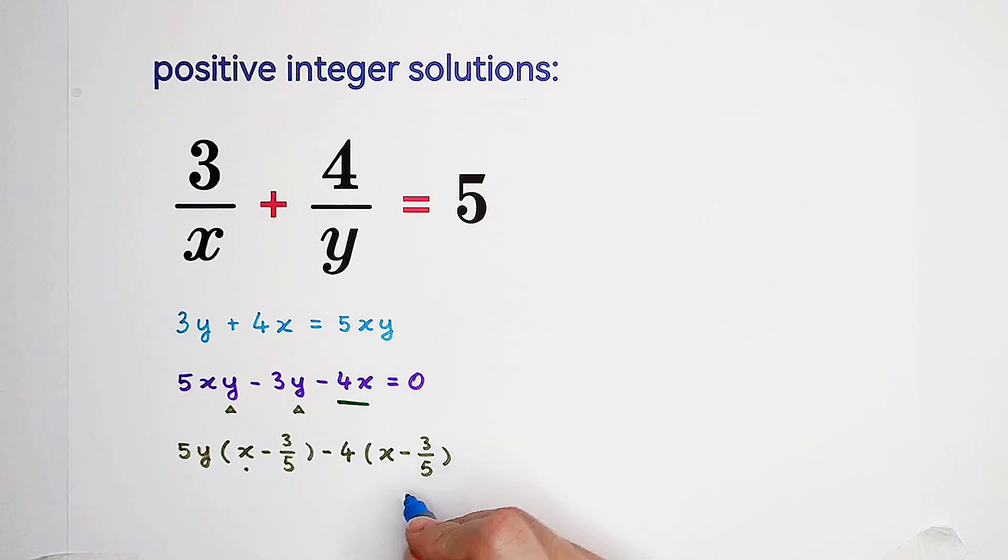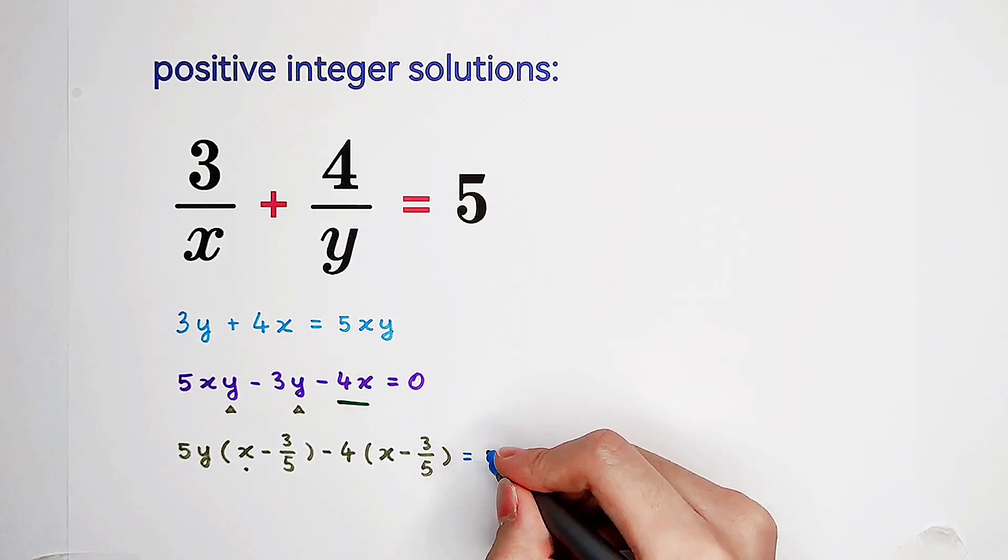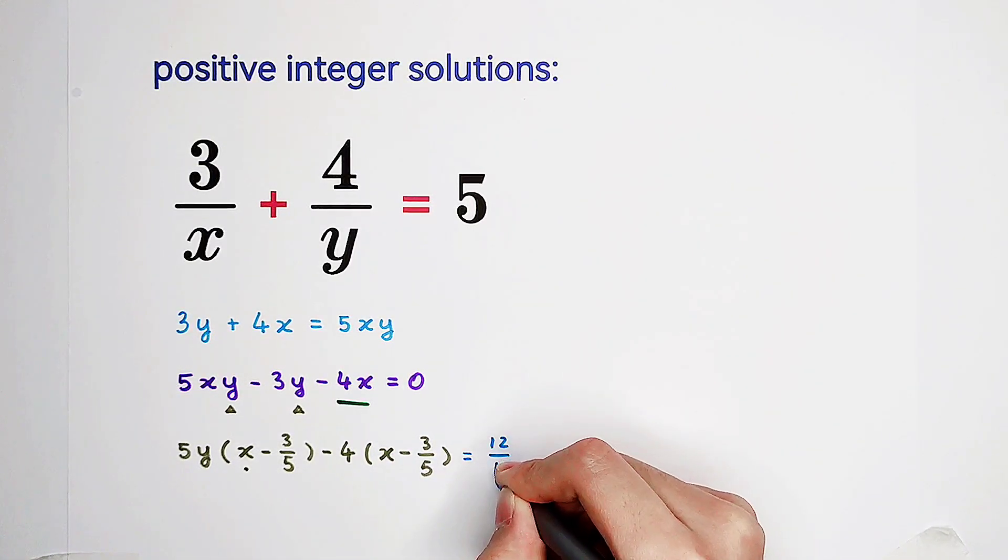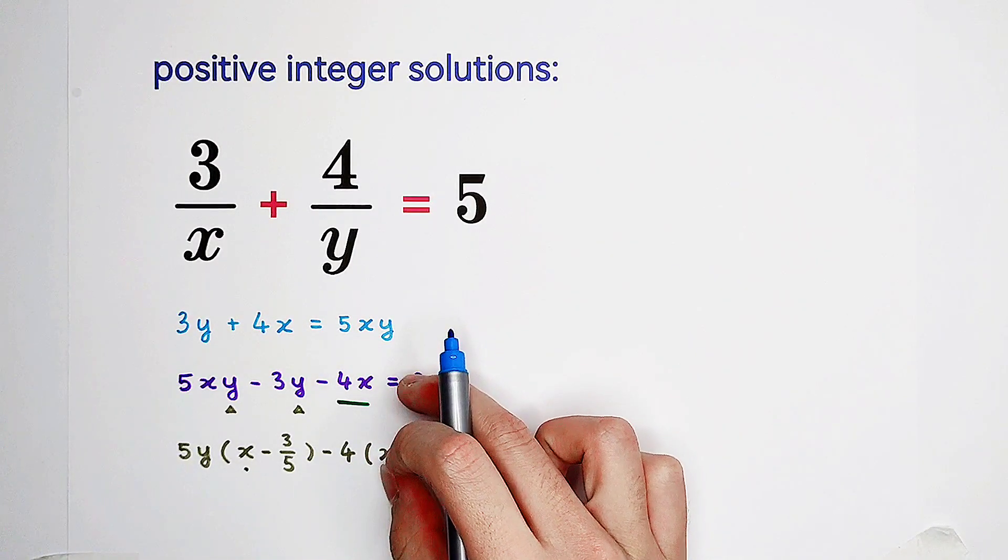In math, nobody is allowed to do that. But, here we have one more constant. It is minus 4 times minus 3 over 5. So we have plus 4 times 3 over 5, plus 12 over 5. So we have to subtract 12 over 5, or add it to the right hand side. Then, it is fair. That means these two equations are equivalent.